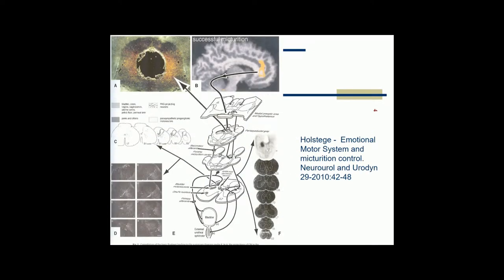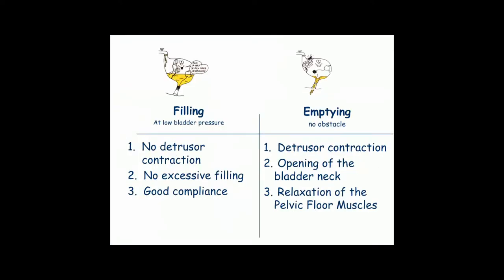We all know that communication and coordination between brain and bladder is very complicated, as described by Holstegen in 2010. I split the working of the bladder into two phases: a filling phase, which should occur at low bladder pressure, and an emptying phase, where you don't need to have any obstacle.